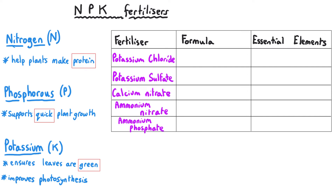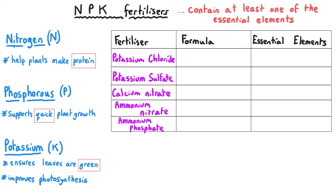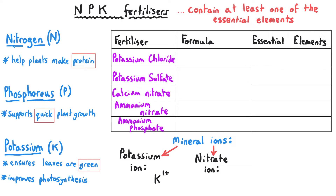The fertilisers that people buy to put on their soil to help crops grow better will contain at least one of these elements in the form of a mineral ion. That's why these fertilisers are collectively known as NPK fertilisers. Typically, these mineral ions will be the potassium ion K+, the nitrate ion NO3-, and the phosphate ion PO4-.